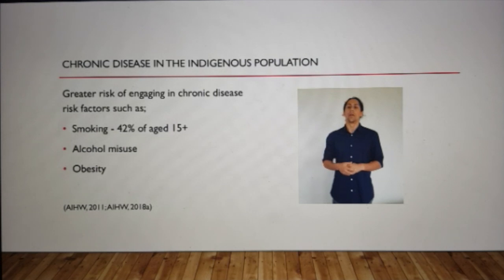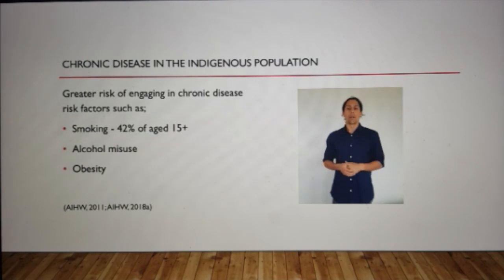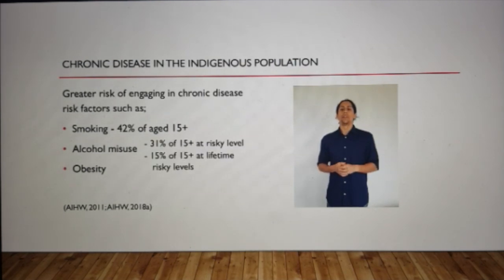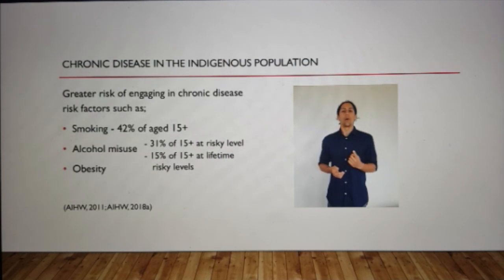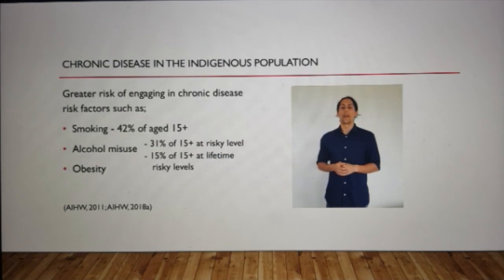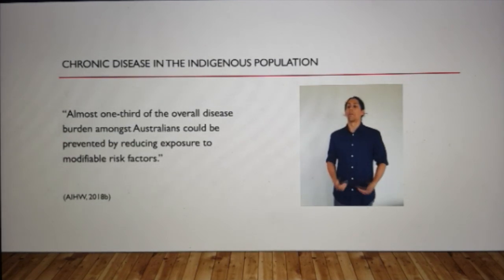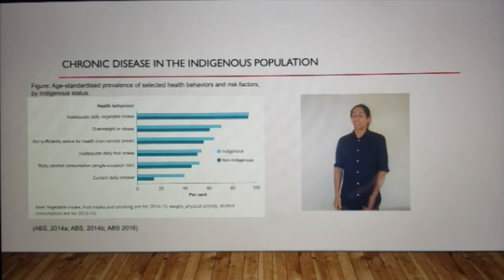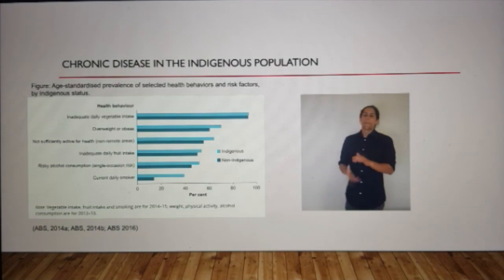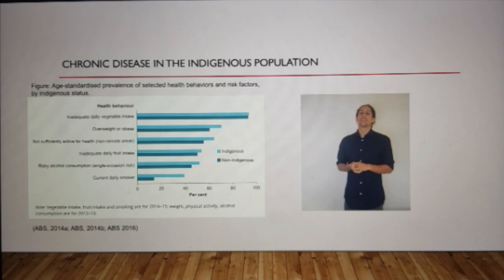Smoking is the single most preventable cause of ill health and deaths in Australia. In 2014–15, around 42% of Indigenous people aged 15 and over were current smokers. 31% of Indigenous people aged 15 and over reported drinking alcohol at a risky level on at least one single occasion — known as a short-term risk. 15% reported drinking at lifetime risky levels. One third of the burden of disease in Indigenous Australians could be prevented by reducing exposure to these modifiable risk factors. In 2014–15, the rate of tobacco smoking for Indigenous Australians was 2.8 times that of non-Indigenous Australians.